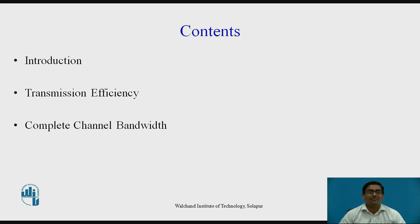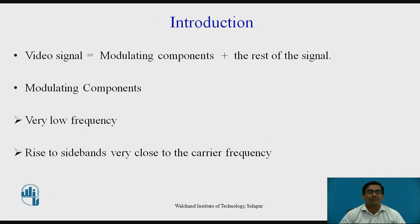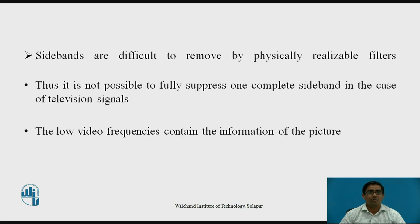The contents of this topic include: first, introduction; video signal formation; modulating components and the rest of the signal. The first modulating components have very low frequency and give rise to sidebands very close to the carrier frequency. Sidebands are difficult to remove by physically realizable filters. Thus, it is not possible to fully suppress one complete sideband in the case of a television signal.